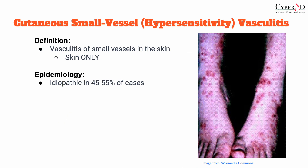Lastly, we have cutaneous small vessel vasculitis, also called hypersensitivity vasculitis. This is a necrotizing vasculitis of cutaneous small vessels caused by immune complex deposition, and involvement of organs other than the skin must be absent — so this is skin only. The etiology is often idiopathic, accounting for about 45–55% of cases. However, all patients should be evaluated for underlying causes, including autoimmune diseases like systemic lupus, ANCA-associated vasculitis, HIV, hepatitis C, and certain drugs — including penicillins, cephalosporins, sulfasalazine, hydralazine, PTU, allopurinol, and phenytoin.